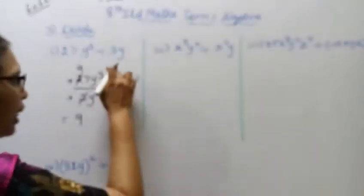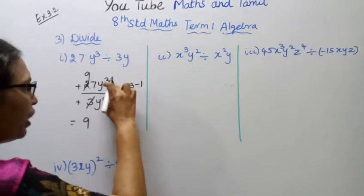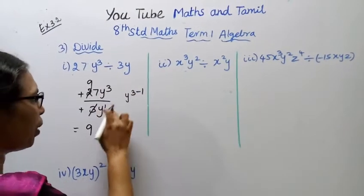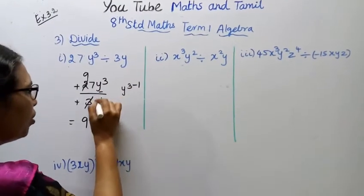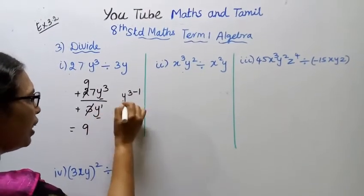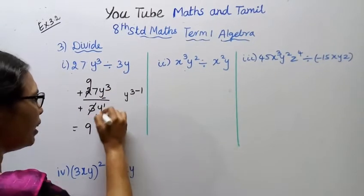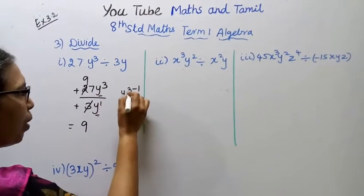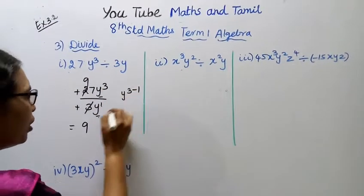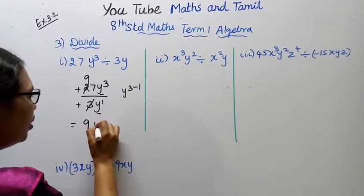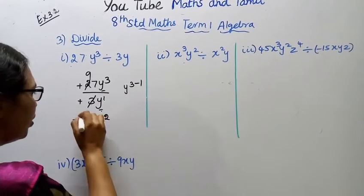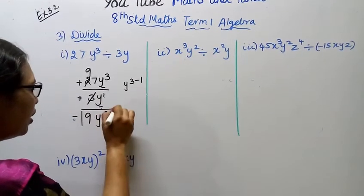This is division, base is the same, so we subtract the powers: 3 minus 1 equals 2. The answer is 9y power 2. This is the sum and the answer.